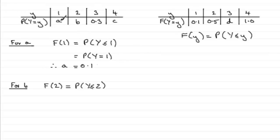We already know a, a is 0.1, so therefore 0.1 plus b must equal 0.5. And obviously if we take 0.1 from both sides, therefore we have that b equals 0.4.